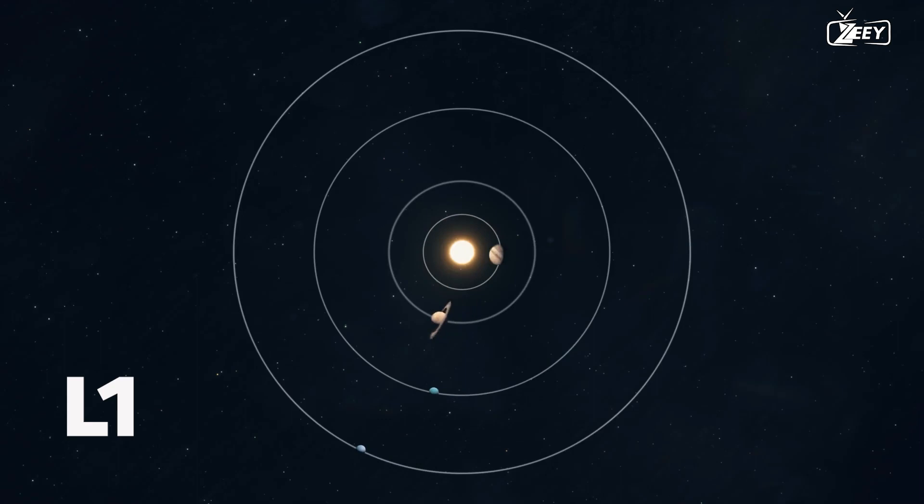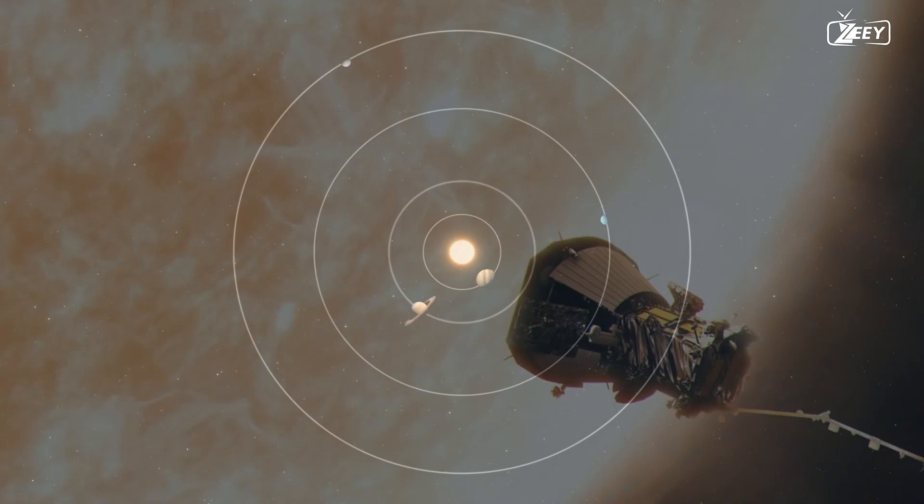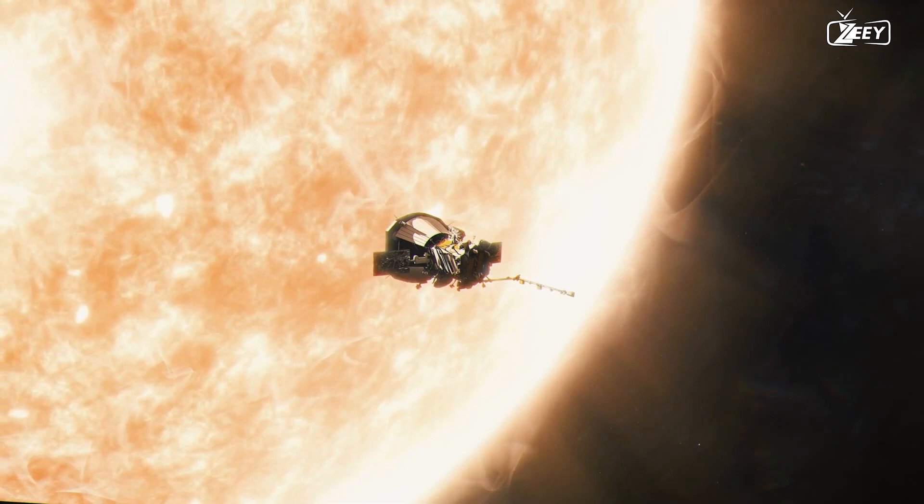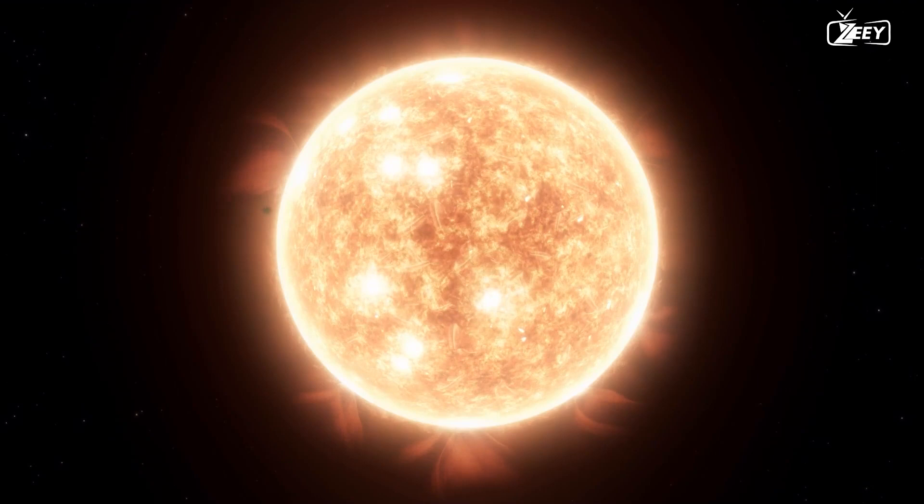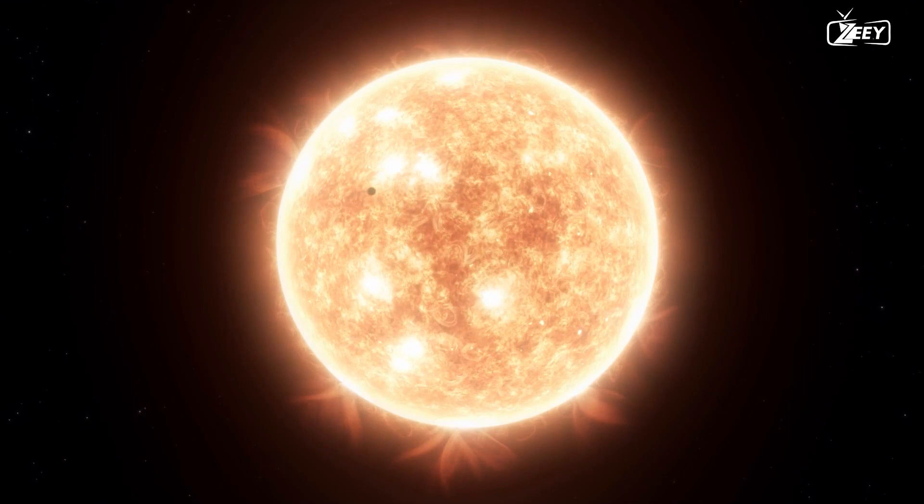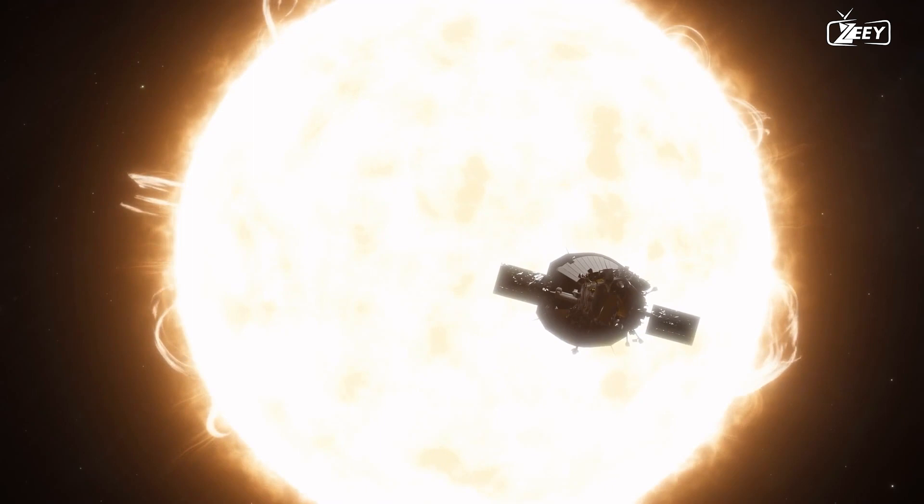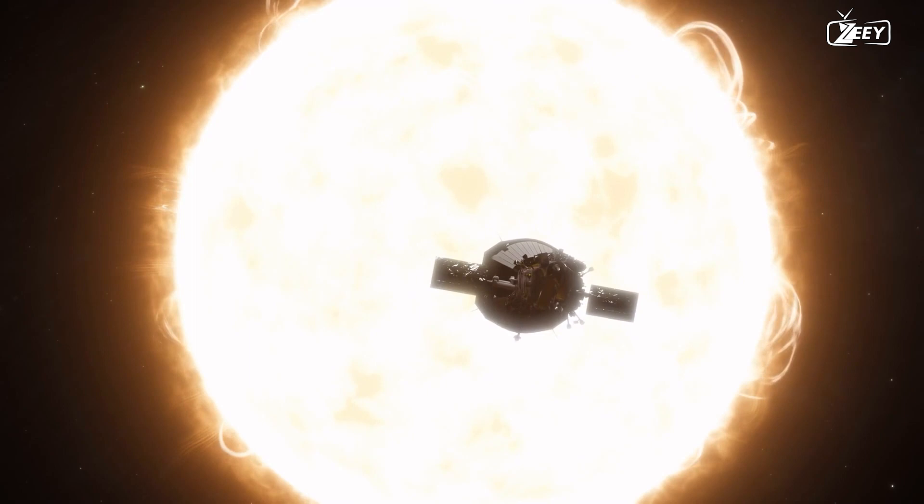L1: An item will move more quickly the closer it is to the Sun. Therefore, any spacecraft orbiting the Sun in a smaller orbit than Earth's will soon pass by our planet. There is an exception, though, if the spacecraft is positioned squarely between the Sun and Earth. Earth's gravity will pull it in the opposite direction and somewhat neutralize the pull of the Sun. The spacecraft can slow down because it needs less speed to stay in orbit. The spacecraft will move slowly enough to maintain its position between the Sun and the Earth if the distance is just right, roughly one hundredth of the distance to the Sun.